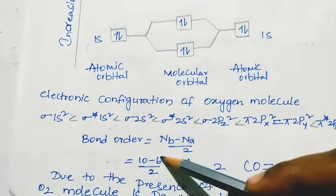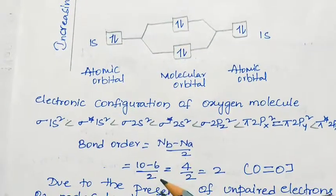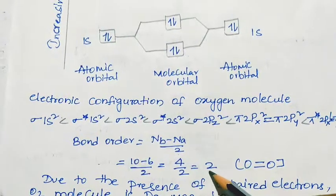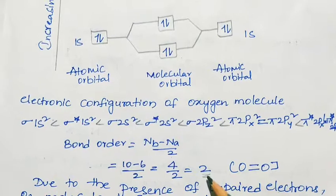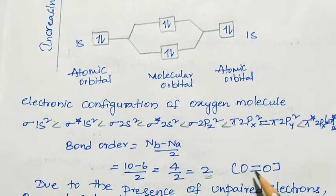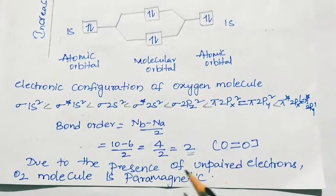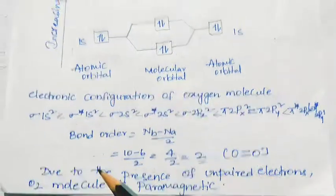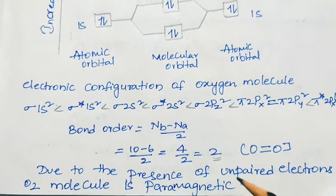So bond order = (10 − 6) / 2 = 4 / 2 = 2. The bond order of oxygen molecule is 2, meaning 2 bonds are present between the 2 oxygen atoms. Due to the presence of 2 unpaired electrons, oxygen molecule is paramagnetic in nature.